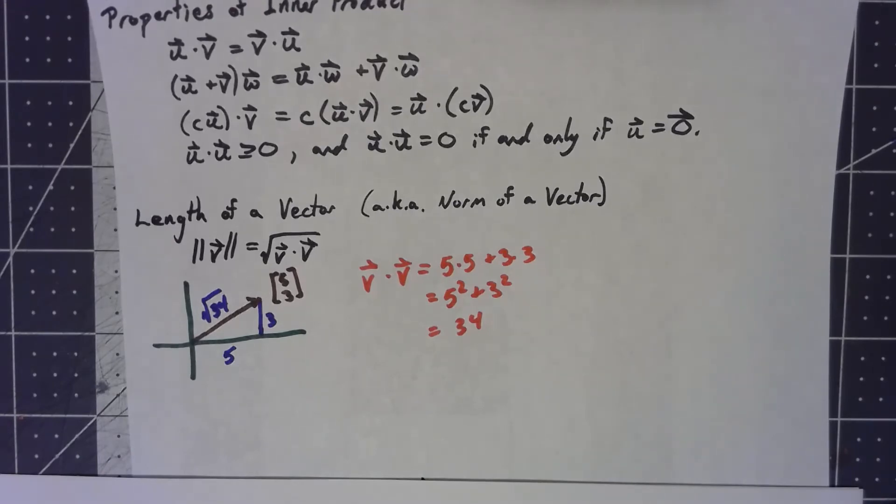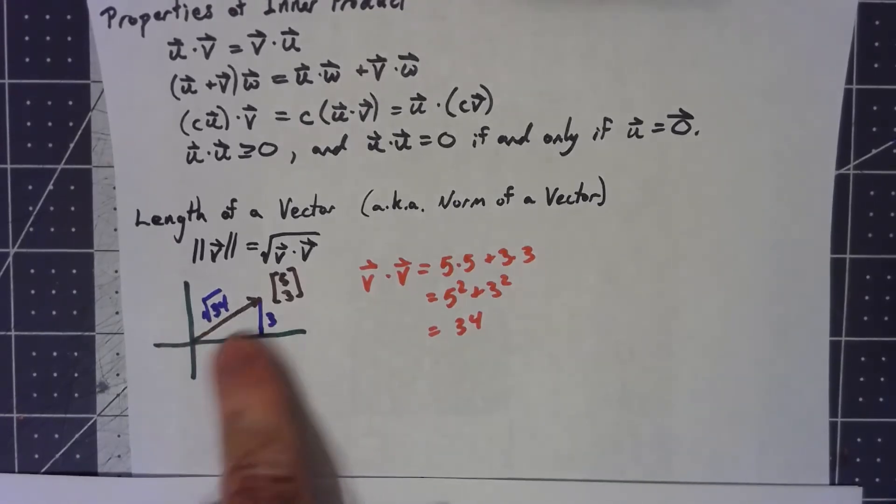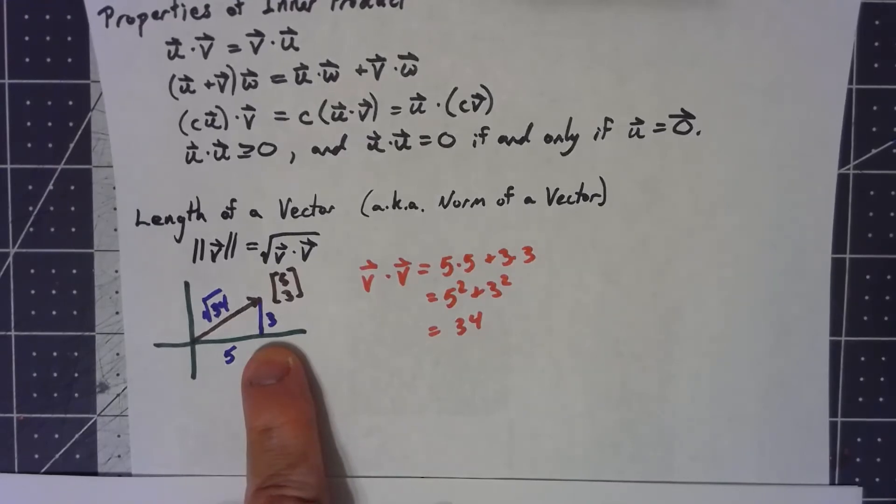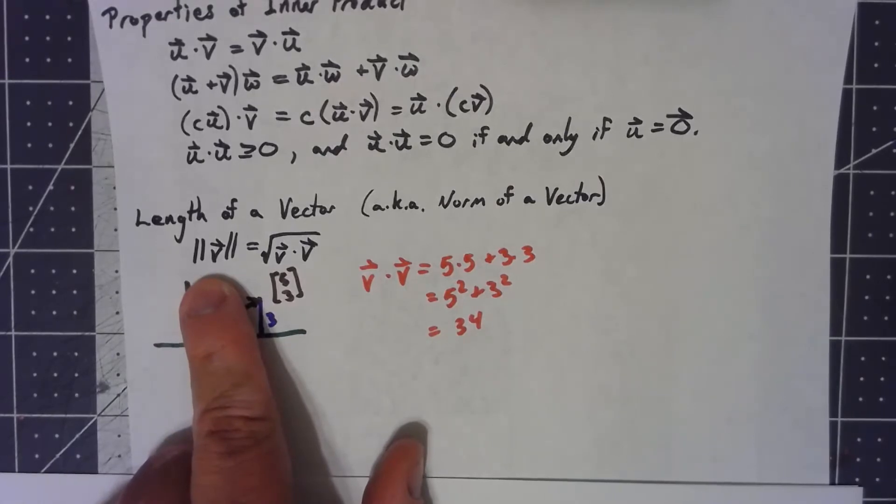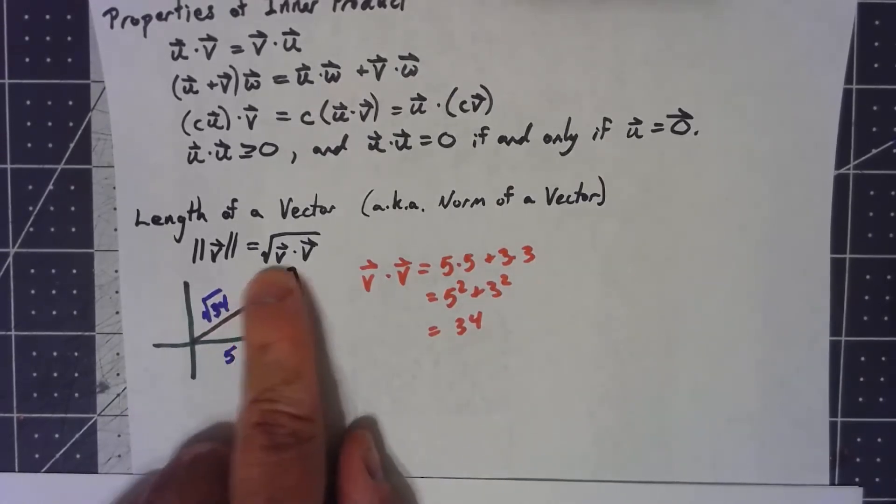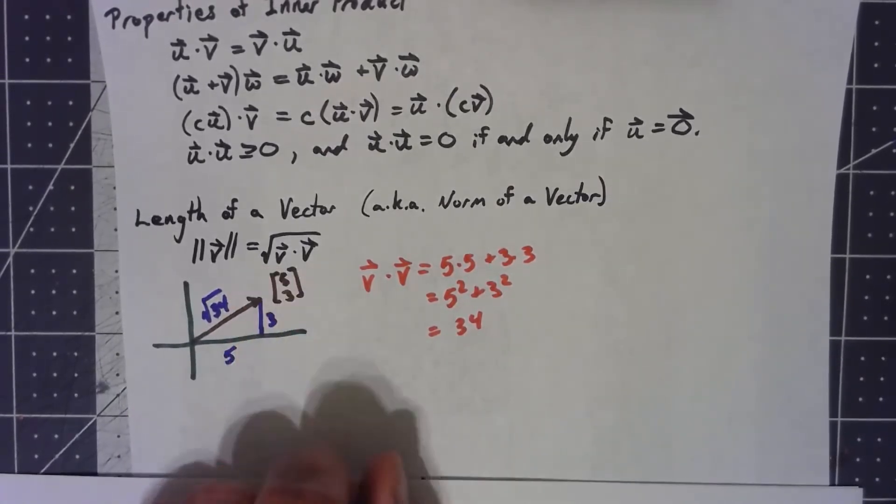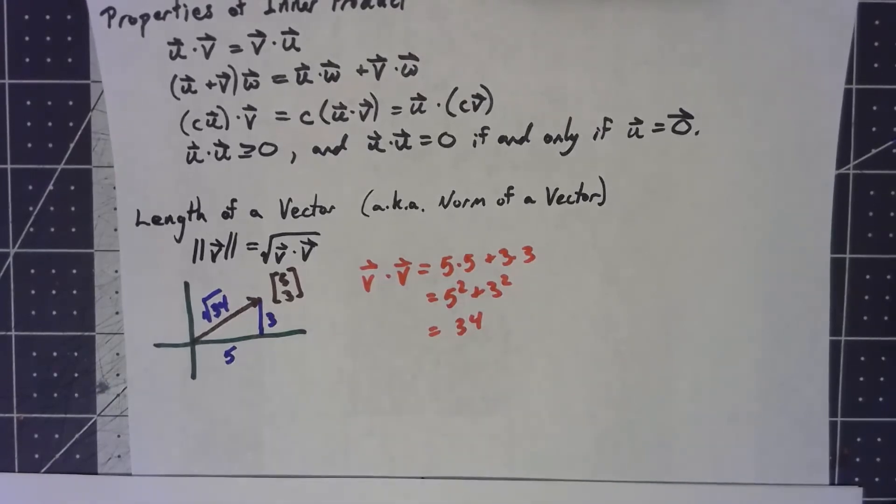Because of this thing, because of this idea that we get out of the Pythagorean theorem, we actually will say that for any vector, no matter how many components, we do that kind of thing. We dot the vector with itself and take the square root, and we'll say that's the length, or more often we'll call it the norm.